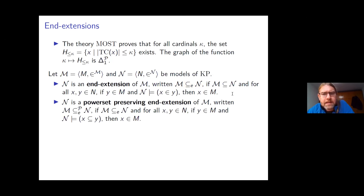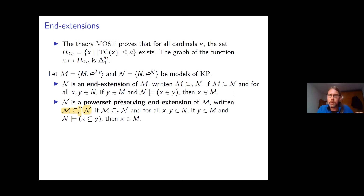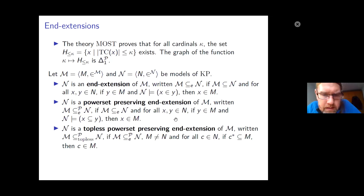There is also a stronger notion: power set preserving end extension. N is a power set preserving end extension of M if N is an end extension of M and in going from M to N, no new subsets of points in M are added. So M and N contain all the same subsets of any points they have in common. When talking about power set preserving end extensions, I want to distinguish between topless and blunt extensions.